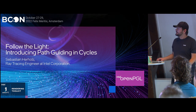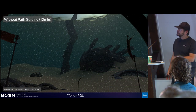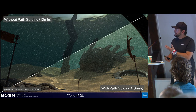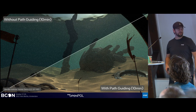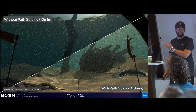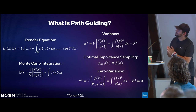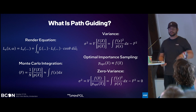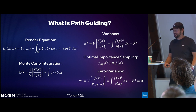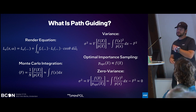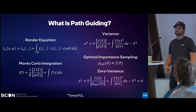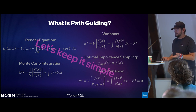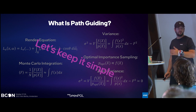What is path guiding? Path guiding is a method which can change images like this, if you try to render something physically correct, to give you something like this — and here we have a direct comparison. I'm going to take you step by step to explain how it is actually possible. I could start with all the math: the rendering equation, Monte Carlo integration, variance, optimal importance sampling, zero variance — and in two hours we would still be here. So let's keep it simple and go at a higher level.